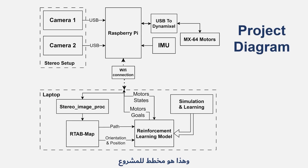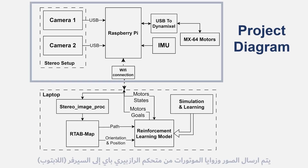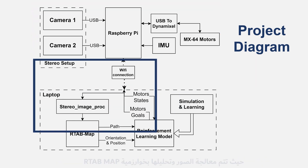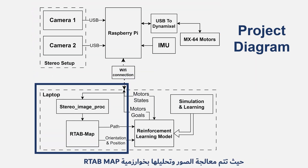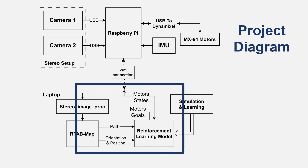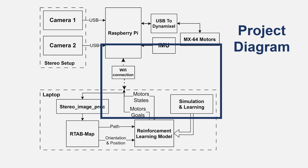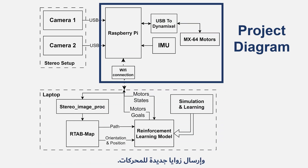This is the project diagram. The images and angles of the motors are sent from the Raspberry Pi to the server laptop, where the images are processed and analyzed using the RTabMap algorithm. Based on this data and the angle values, the trained model in PyBullet makes a decision and sends new angles to the motors.